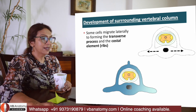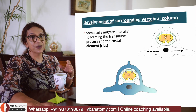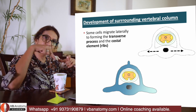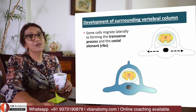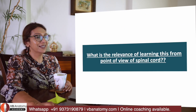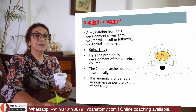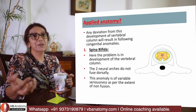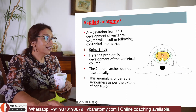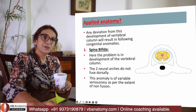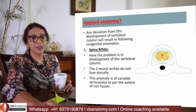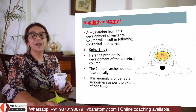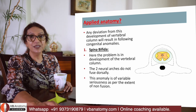A vertebra gets formed and comes to lie completely around the three meninges and the spinal cord. Sometimes these developments do not take place as expected, and the condition that develops is called spina bifida — a vertebral development disorder which results in major neurological deficits for the child.